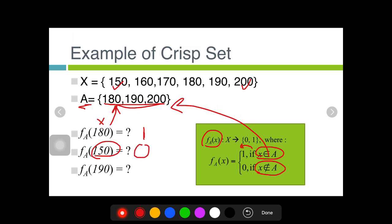What about 190 here? 190 is an element of A, then it will return one. I hope you have understood the concept of crisp set.